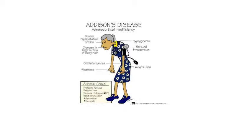Addison disease is usually diagnosed after a significant stress or illness unmasks cortisol and mineralocorticoid deficiency, presenting as shock, hypertension, and volume depletion, also known as adrenal or Addisonian crisis.